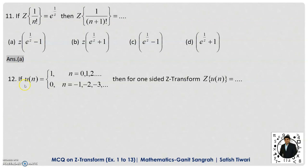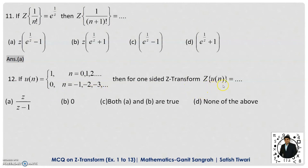Question 12: If u(n) = 1 for n = 0, 1, 2, 3, ... and u(n) = 0 for n = −1, −2, −3, ..., this is the unit step sequence. For the one-sided Z-transform, the limit starts from 0 to infinity, so u(n) = 1 for all terms in the summation — meaning we need Z{1} = Z/(Z−1). For a two-sided Z-transform both options A and B could apply, but because it is one-sided, option A is the only correct answer.